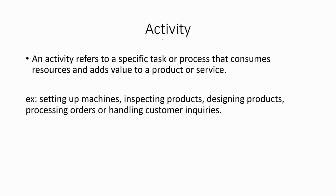Before we discuss activity-based costing, there are a few terms you need to know. Activity: an activity refers to a specific task or process that consumes resources and adds value to a product or service. For example, setting up machines, inspecting products, designing products, processing orders, or handling consumer inquiries. All these are activities within an organization that consume resources and add value to a product or service.